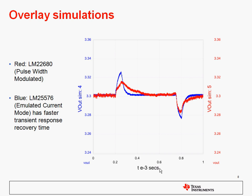Here's an overlay of the two plots, which you can do in WEBENCH using the advanced waveform controls. And you can see a little closer that the pulse width modulated did have somewhat longer recovery time, but the overshoot and undershoot was less than the emulated current mode part. And so you can see here the tradeoff recovery time versus overshoot and undershoot can be made very visible using this tool.